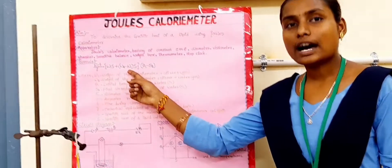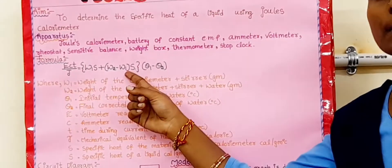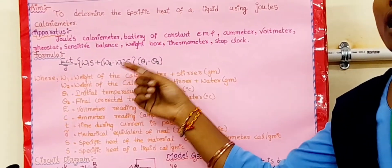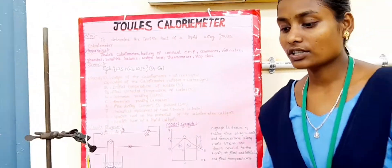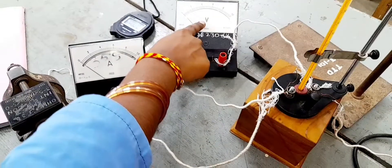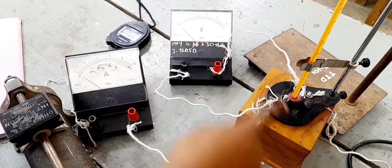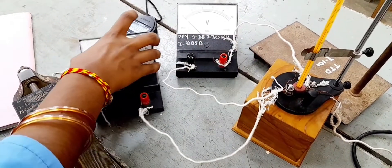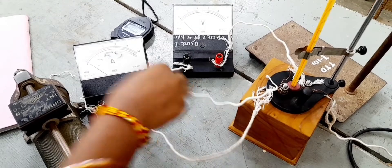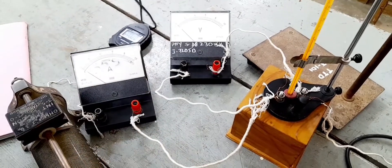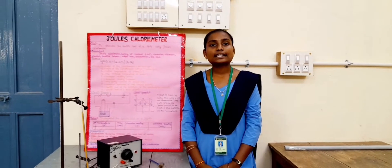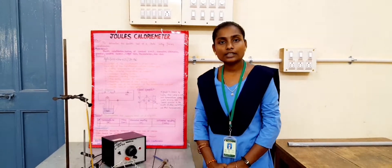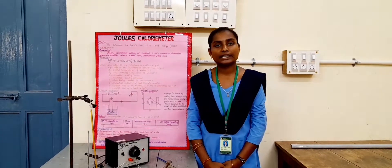From the formula, we finally find the specific heat of the liquid using Joules calorimeter. Precautions: voltmeter and calorimeter connected in parallel, ammeter and calorimeter are connected in series. Finally, result is specific heat of liquid can be determined by Joules calorimeter.